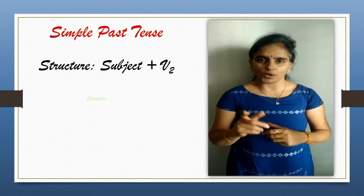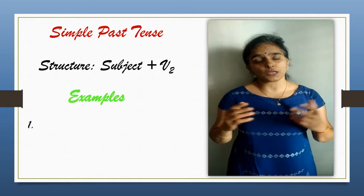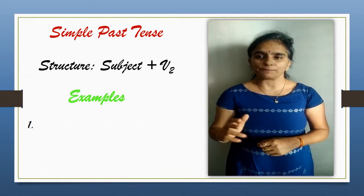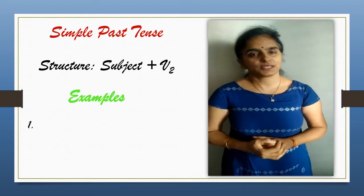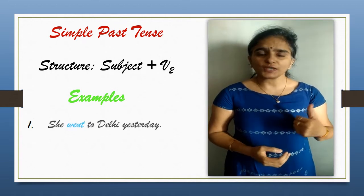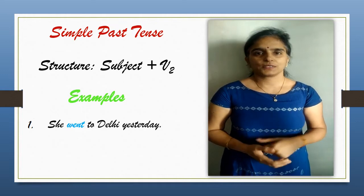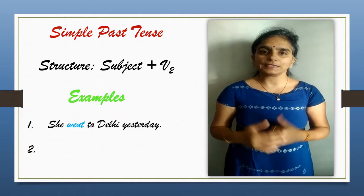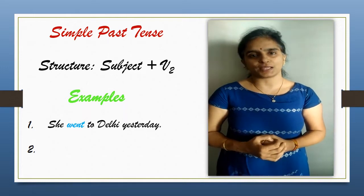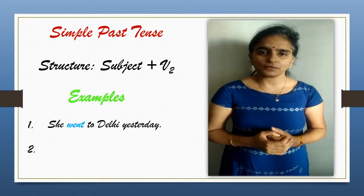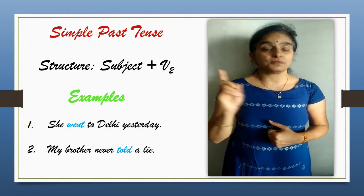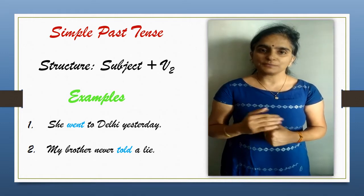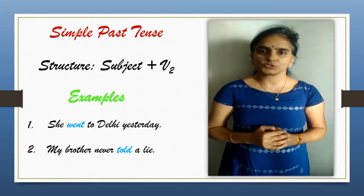Usage one: when you are talking about any event or action which happened in the past. Example: she went to Delhi yesterday. Usage two: when you are talking about any repeated or habitual action. Example: my brother never told a lie. I hope simple past tense is understood to you.